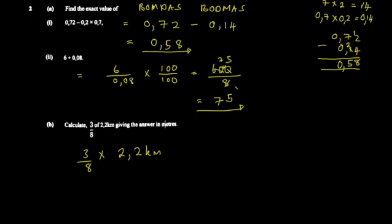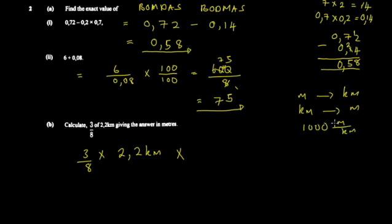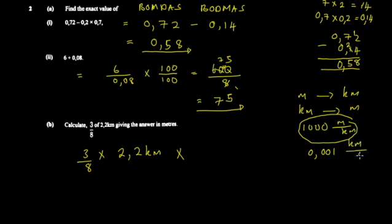The conversion factor from kilometers to meters is 1000 meters per kilometer — there are 1000 meters in every kilometer. There are two ways to write this: 1000 meters per kilometer, or 0.001 kilometers per meter. We need kilometers to cancel, so we use 1000 meters per kilometer. Using the other form would square the kilometers, which we want to avoid.